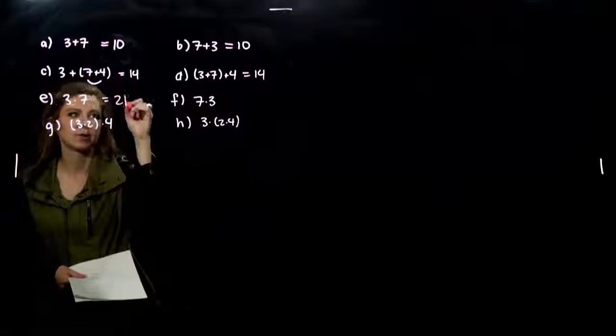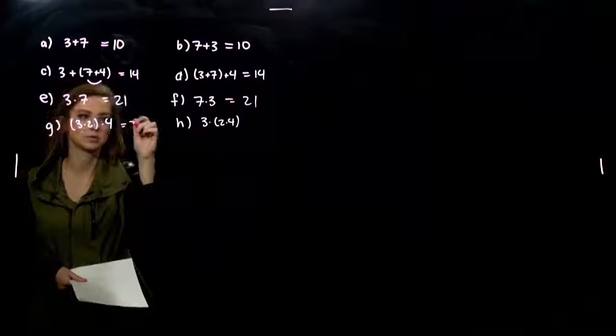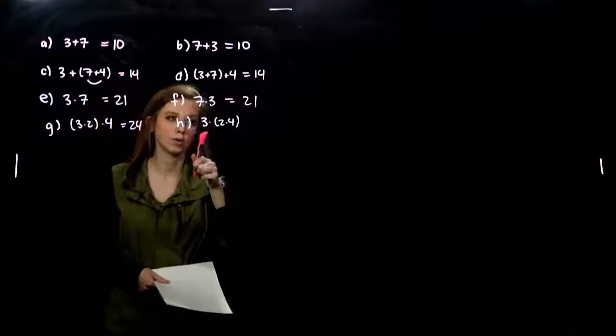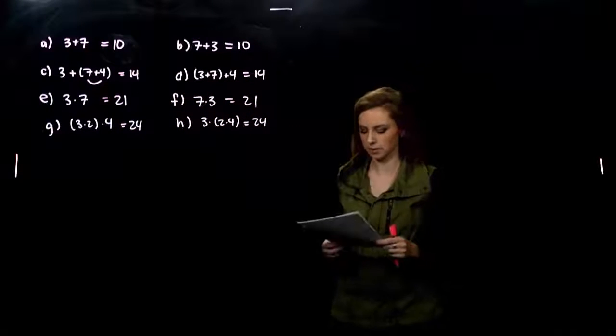3 times 7, 21. 7 times 3, 21. 6 times 4, 24. Or 3 times 8, 24. So what does that mean with addition and multiplication?